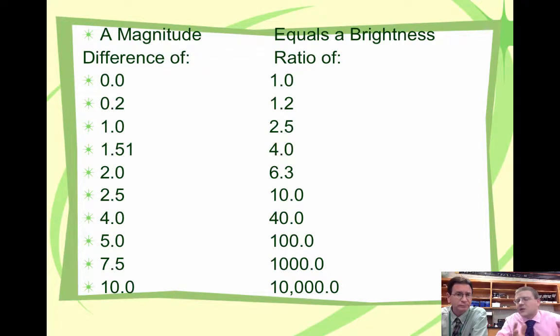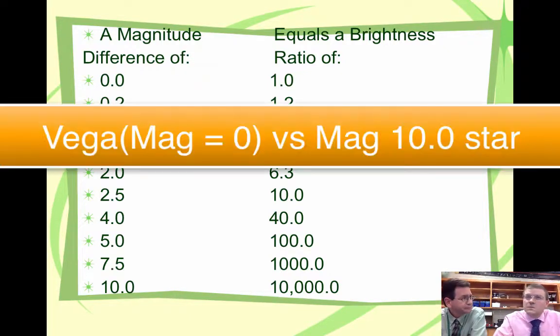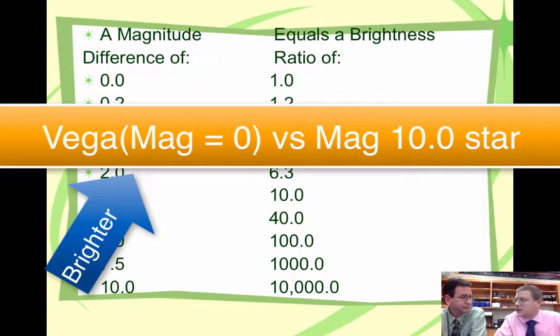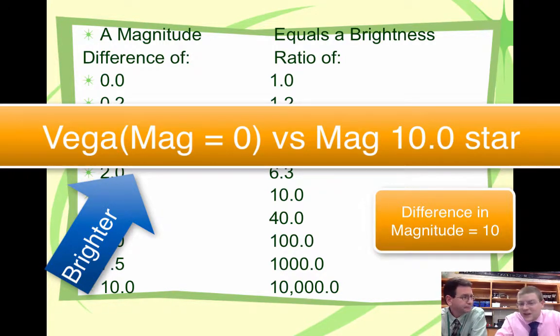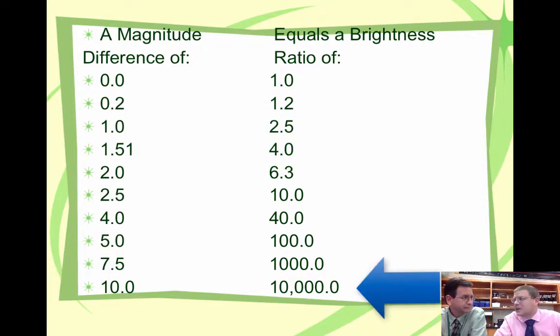So give me an example and I'll tell you which one's brighter and by how much. Vega and a star that was a brightness of 10. Vega would be the brightest star because 0 is brighter than 10. They're a 10.0 difference. So Vega would be 10,000 times brighter. That'd be 2.5 times 2.5 times 2.5. Do that 10 times and you get 10,000. It's a very bright star.